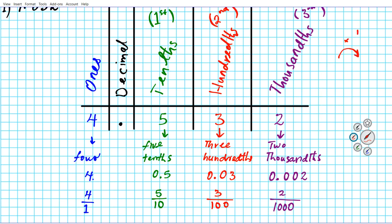The direction of movement relates to the operation: every place to the right, you're multiplying by one-tenth — the same as dividing by ten. Going to the left is the inverse operation, which we covered in sections 1-1 and 1-2: you're multiplying by ten.